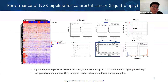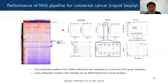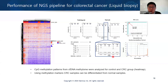For the colorectal cancer case, we analyzed methylation patterns. It is normally known that colorectal cancer is relatively easy to detect using ctDNA analysis, and we also obtained the same results. From stage 1 to stage 4, we can precisely detect colorectal cancer from blood — more precisely, from plasma samples.